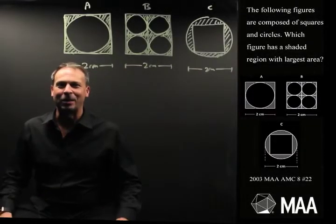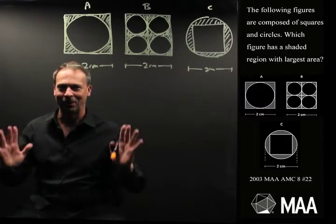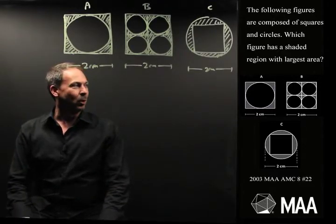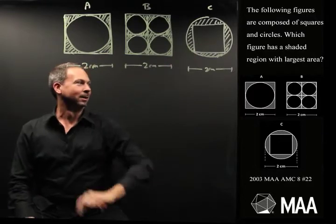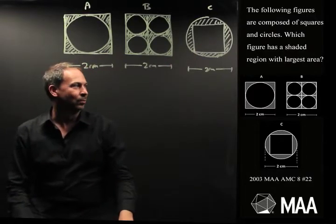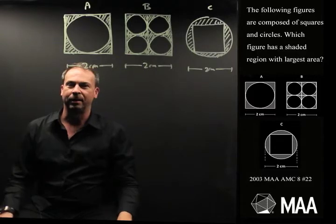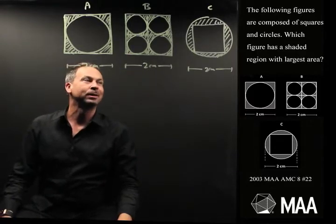Welcome to another Curriculum Burst. Here's a really cool geometry problem for middle schoolers. It goes as follows. The following figures are composed of squares and circles. Which figure has the shaded region with the largest area? A, B or C?